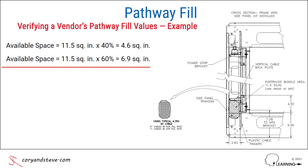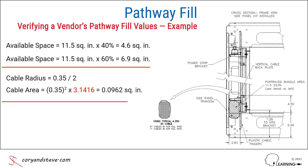Next, we calculate the individual cable area, first by taking the cable's outside diameter and dividing it by 2 to get the radius. Then, we square the radius and multiply by pi to get a 0.0962 square inch area per cable.